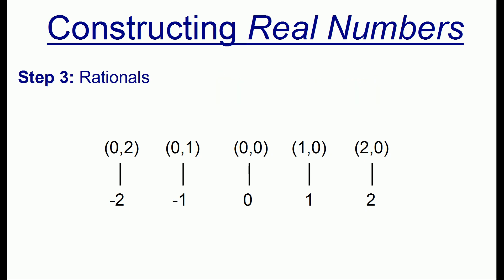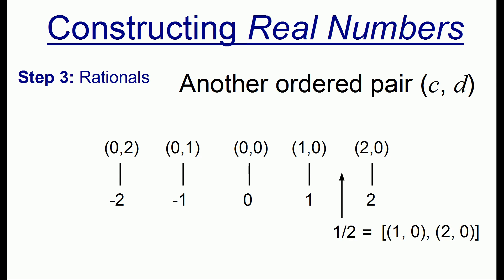To build up the fractions or all the rationals, we're going to have another ordered pair of any of the integers we've just built. So the fraction 1 half, we can write out as the ordered pair of the number 1 and the number 2.